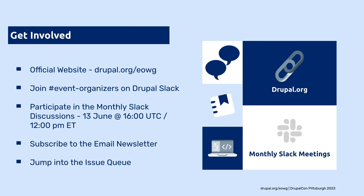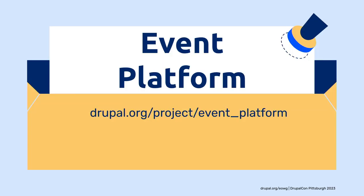To get involved: visit the website, join the Slack, our next meeting is June 13th at 1600 UTC or 12 PM Eastern, sign up for the newsletter, jump into our issue queue, and ping us in Slack. We want to help event organizers — it's all at the service of the wider community. It's really important that we connect and try to lift all of ourselves up. There's also a video that Martin just made that's a nice little demo of the Events Platform — it's in the event organizers channel.